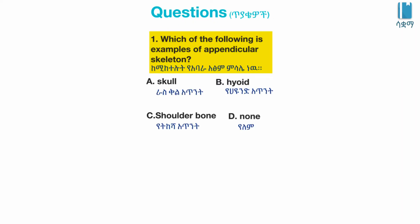Quiz question: Which of the following is an example of the appendicular skeleton? Options: A) skull, B) hyoid bone, C) shoulder bone, D) mandible.